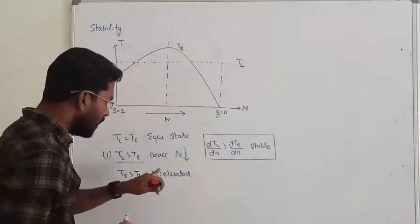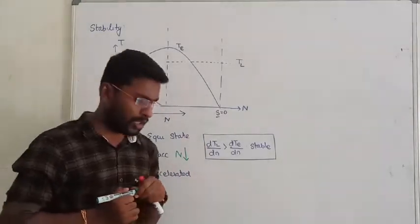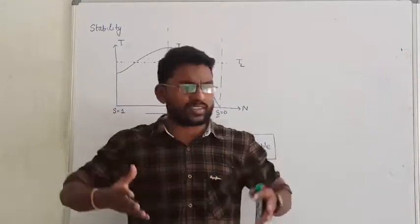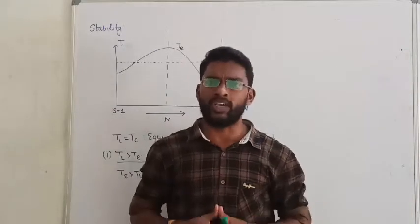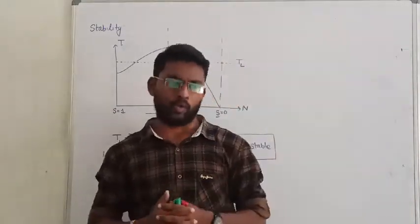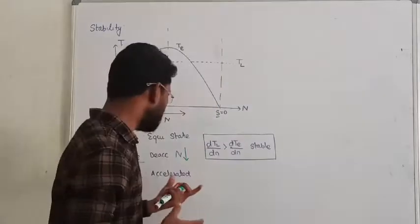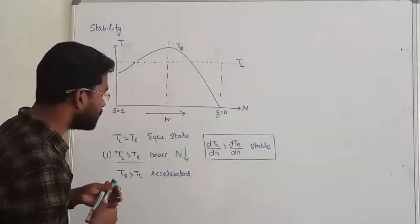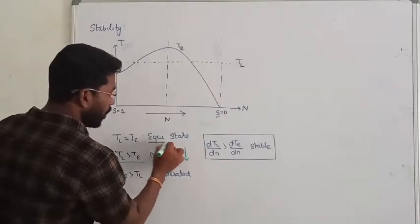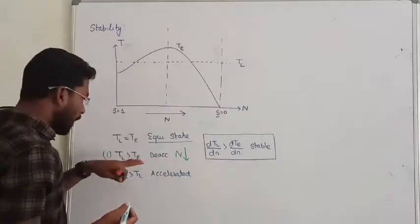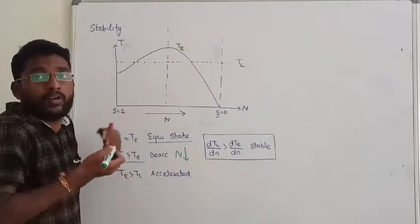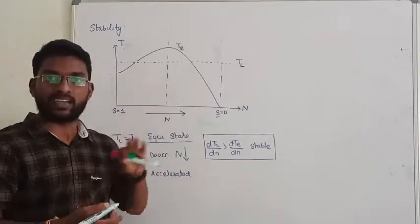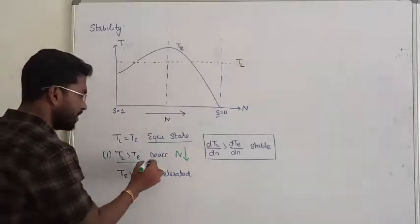If the speed of the machine is reducing, my question is: is the system stable or unstable? Obviously, the system is going to be stable. Why? Because if you apply load to the machine, it will decelerate. The actual speed will decrease, and still my system is stable.